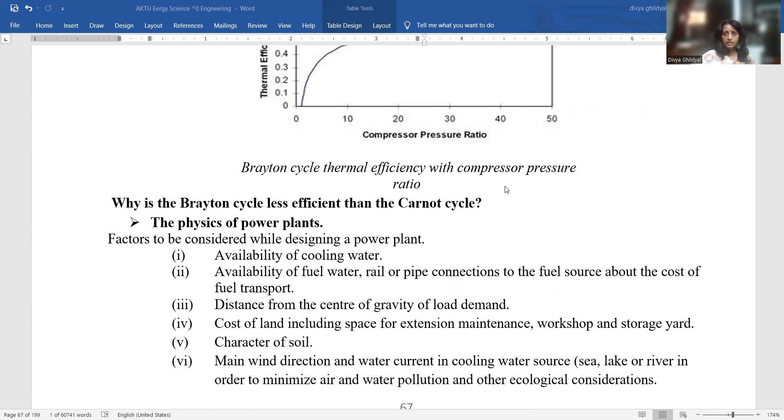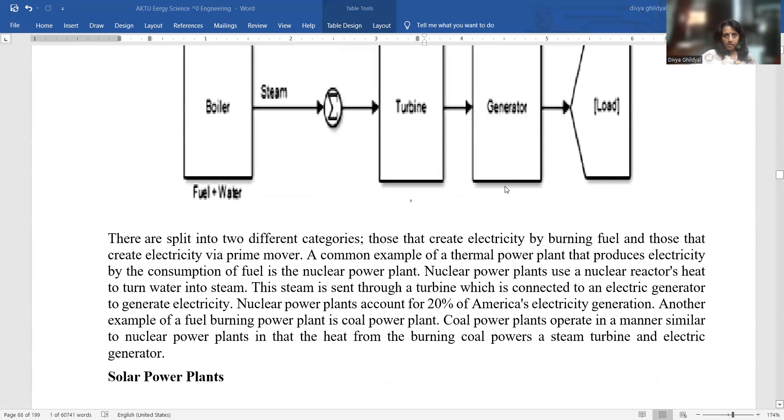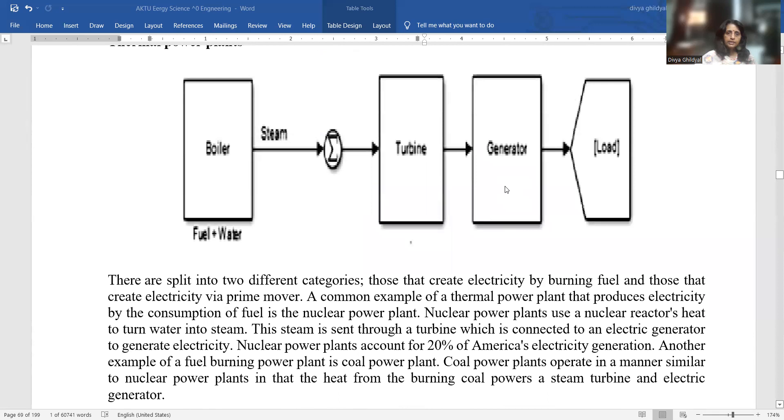The physics of power plants. Factors to be considered while designing a power plant: availability of your cooling system, availability of fuel water, distance from center of gravity. Thermal power plants are split into different categories: those that create electricity by burning fuel and those that create electricity via prime mover. A common example of thermal power plant that produces electricity by consumption of fuel is the nuclear power plant. Nuclear power plants use a nuclear reactor heat to turn water into steam. This steam is then sent through a turbine which is connected to an electric generator to generate electricity. Nuclear power plants account for 20% of America's electricity generation.